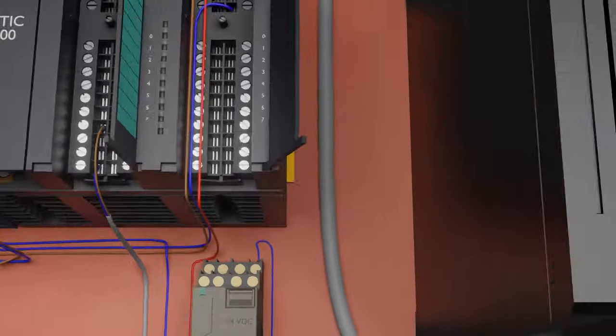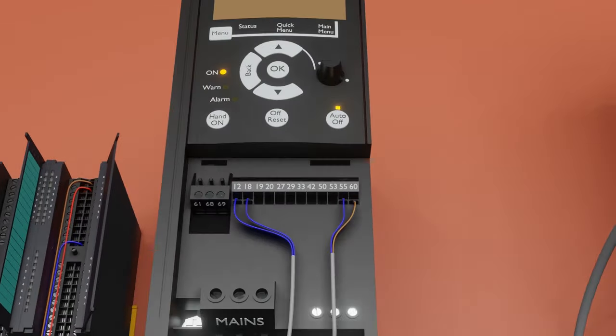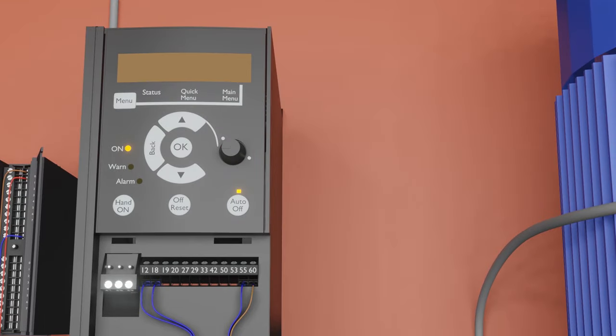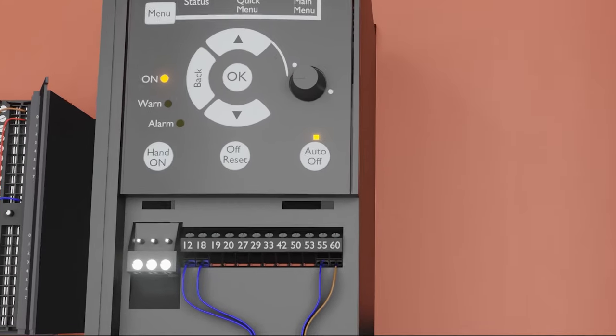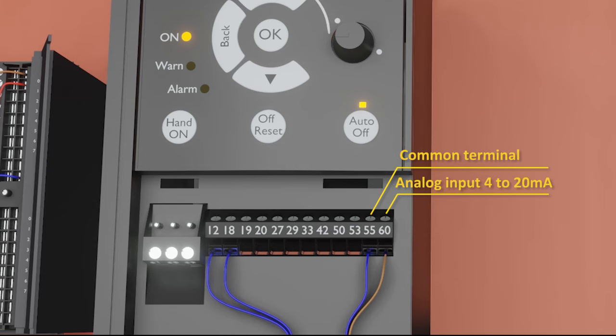Next we have a Danfoss VFD. We will connect the analog output signal from the PLC to the analog input terminal of the VFD as a speed reference. Terminal number 60 is the analog current input of the VFD, and terminal 55 is the common terminal for this analog input.